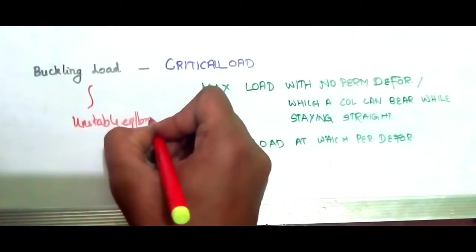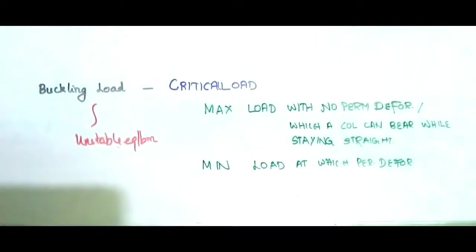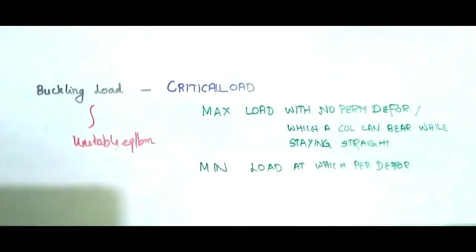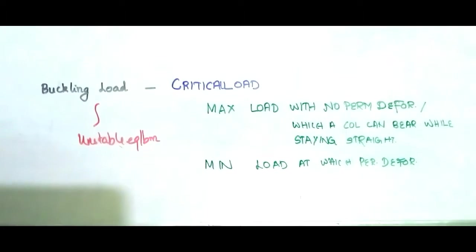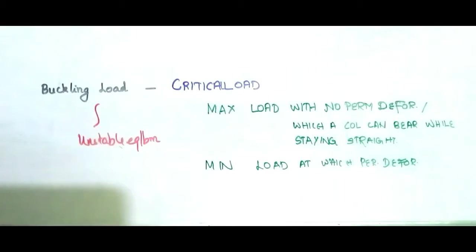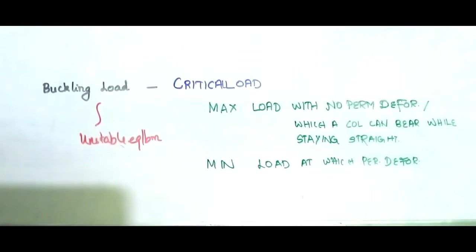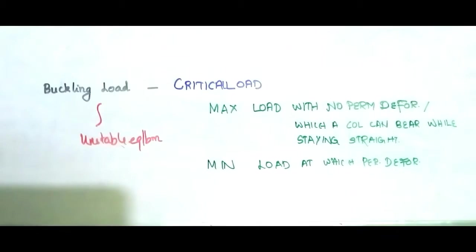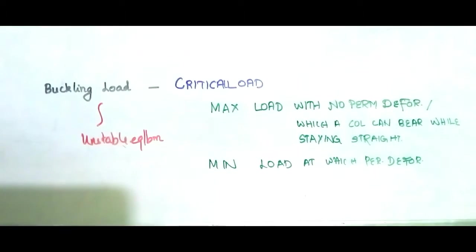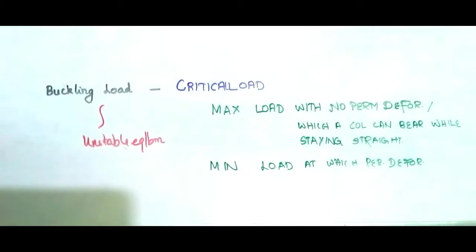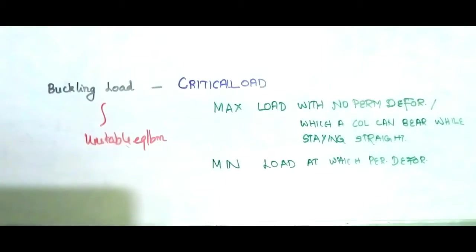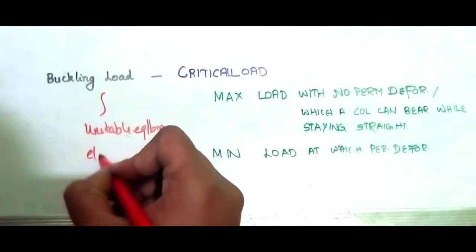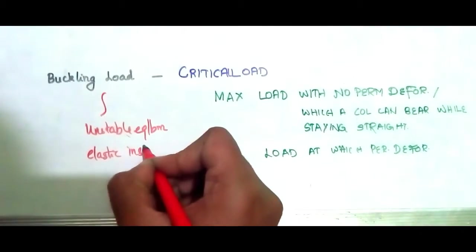So the critical load will ultimately put the column in a state of unstable equilibrium. Below the critical load, permanent deformation is not induced — the column will be elastically stable. At the critical load, the column will be elastically unstable. So critical load is called the unstable equilibrium load. The load beyond the critical load which causes the column to fail by buckling — causing permanent lateral deformation — can be defined as the buckling load.